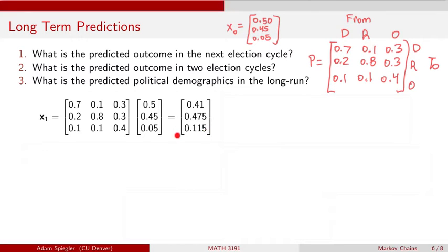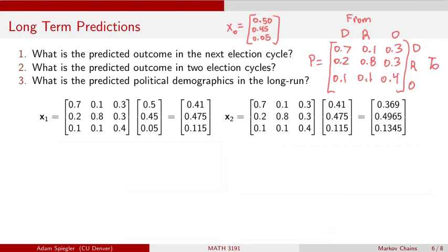Then we predicted what the results would be one election cycle later by taking this transition matrix, multiplying it by X0 to wind up with X1, which happens to be 0.41, 0.475, 0.115.